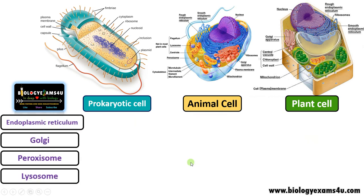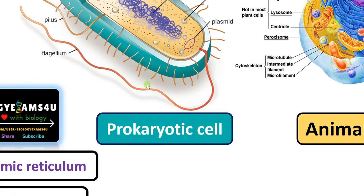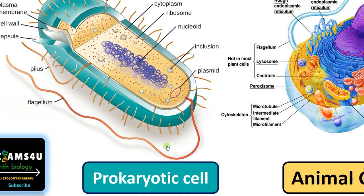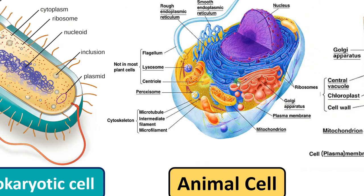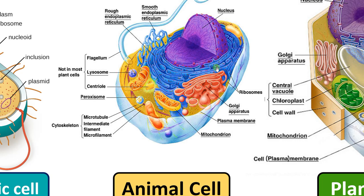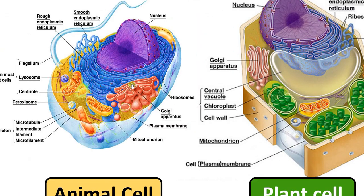Now let us take the next four structures: endoplasmic reticulum, Golgi apparatus, peroxisome and lysosome. All these structures are absent in prokaryotic cell. Endoplasmic reticulum is present in both animal cell and plant cell. As you see, this is the RER and this is the smooth endoplasmic reticulum. RER is involved in protein synthesis, specifically secretory protein synthesis, whereas SER is involved in lipid synthesis.